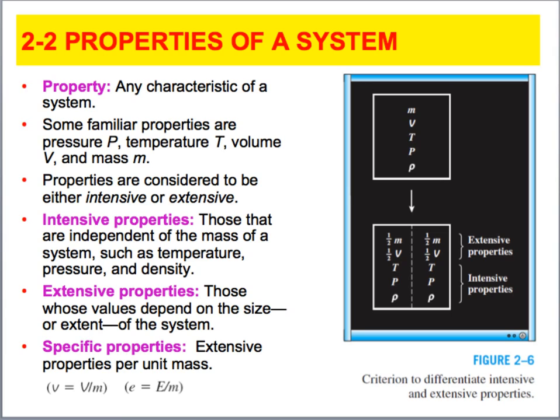Some of them are dependent on mass. Others are not. The ones that are dependent on mass or size of the system are called extensive properties being mass and volume. Intensive properties are those independent of mass. So that would be density, pressure, and temperature.